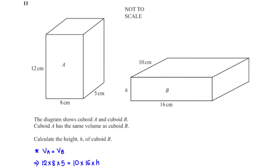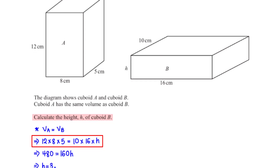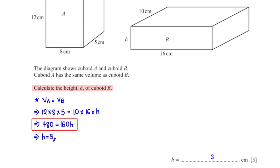The diagram shows cuboid A and cuboid B. Cuboid A has the same volume as cuboid B; calculate the height h of cuboid B. The volume of cuboid A is 12 times 8 times 5 = 480 cm³. The volume of cuboid B is 10 times 16 times h = 160h. Dividing both sides by 160 gives h equals 3.